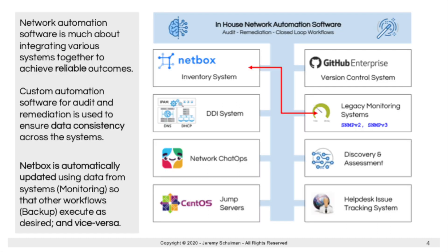What I'm showing here is not everything we're connected into at MLB, but a large cross-section of the systems I'm integrating with. For me, network automation is a lot about integration of systems together to create reliable outcomes — and reliable outcomes is really the goal. Because if we build systems that are not reliable, people don't trust them, and if they don't trust them, they don't want to use them. So we started building with NetBox as a back end to our chat ops system.